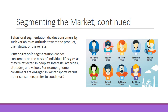Then there's psychographic segmentation, which divides consumers on the basis of individual lifestyles as reflected in their interests, activities, attitudes, and values. For example, some consumers are engaged in sports versus others who prefer to couch surf. The behavioral and psychographic segmentations really overlap — much of our psychographic aspects inform our behavioral aspects and vice versa.